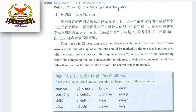Rules of Pinyin tone marking and abbreviation: Tone marks in Chinese Pinyin are placed above vowels. When there are two or more vowels in a final or syllable, the tone should be marked on the vowel pronounced with the mouth most wide open. The sequence is: A, O, E, U, Ü — in descending order.